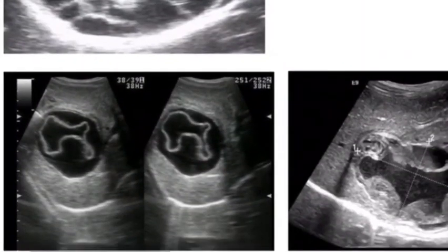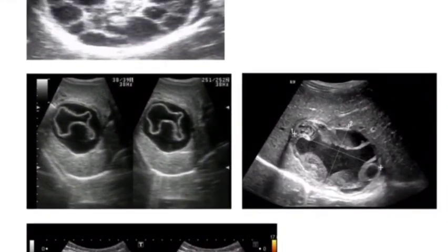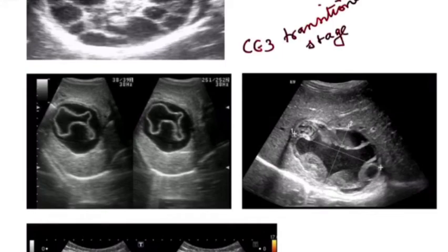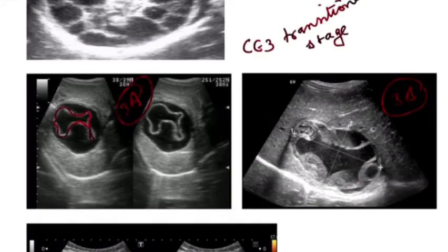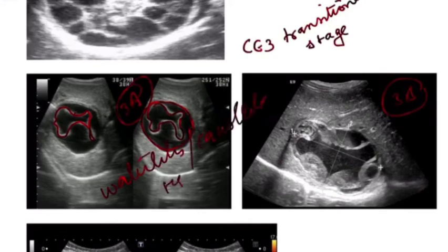The CE3 stage is the transitional stage — it does not stay and is just a transient phase. CE3 has two sub-stages, 3A and 3B. In CE3A, the daughter cysts have a detached laminated membrane — we see a cyst with a floating membrane within it. This is known as the water lily sign, camelot sign, or serpent sign.